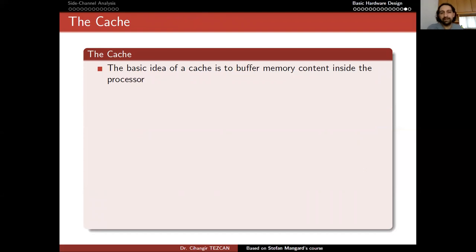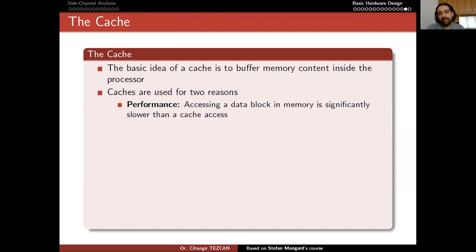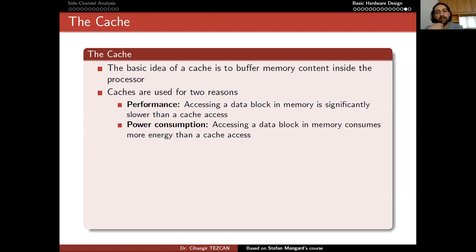Let's move on to cache. The basic idea of a cache is to buffer memory content inside the processor. Caches are used for two reasons. First, performance: accessing a data block in memory is significantly slower than a cache access — constantly used data in memory is stored in cache, which gives a performance boost. Second, power consumption: accessing a data block in memory consumes more energy than a cache access. For embedded systems, this is important — you can save power by using cache.